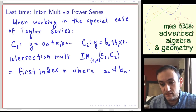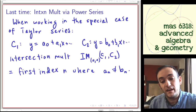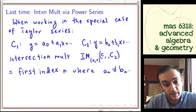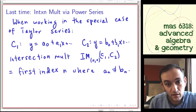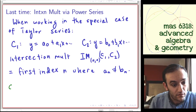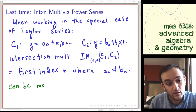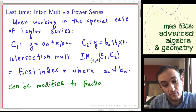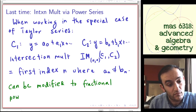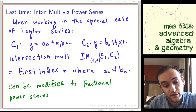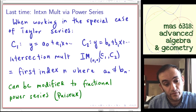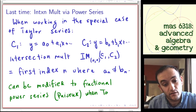Because that's the first place where they would disagree. So by picking up higher order terms in the power series where the two curves agree, you get higher intersection multiplicity. And then this can be modified to fractional power series, or Puiseux series, when no Taylor series is available.